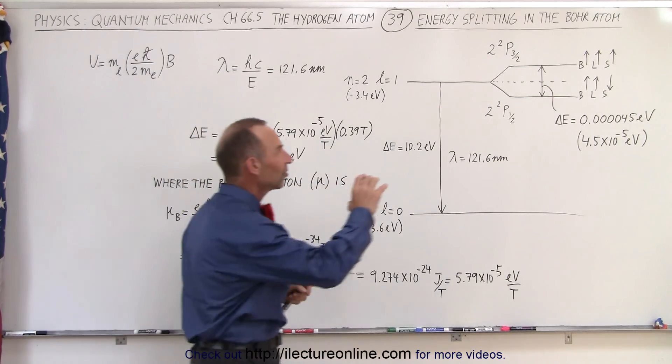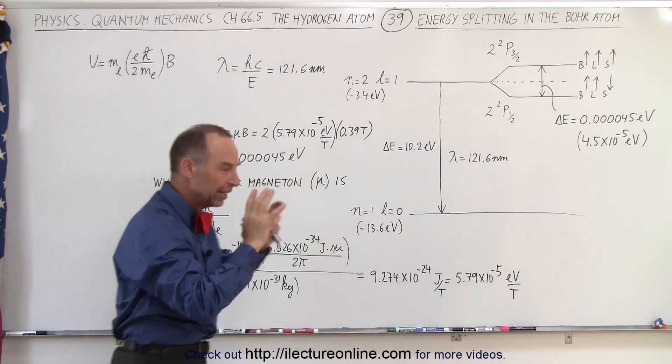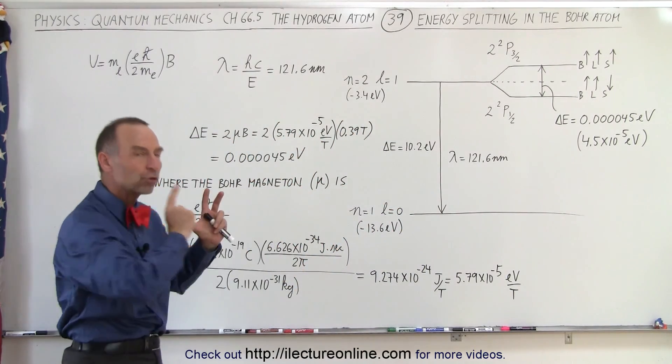So again, what causes slight splitting of the energy levels is the interaction between the spin of the electron and the magnetic field produced by the orbital motion of the electron.